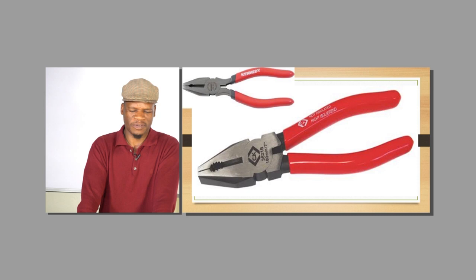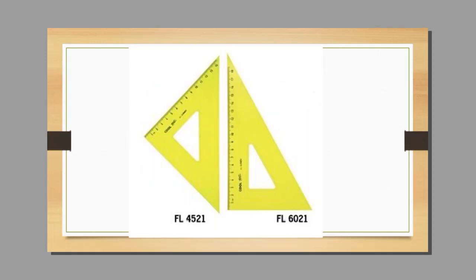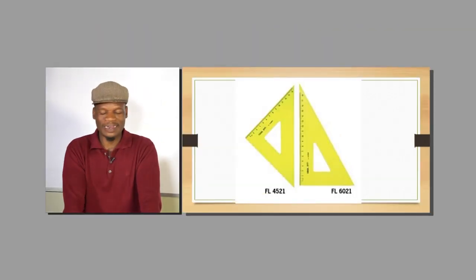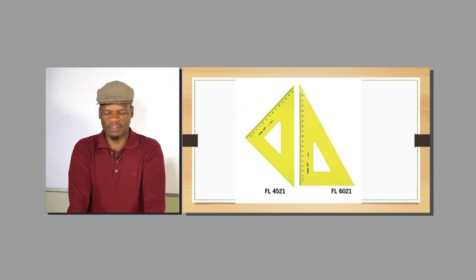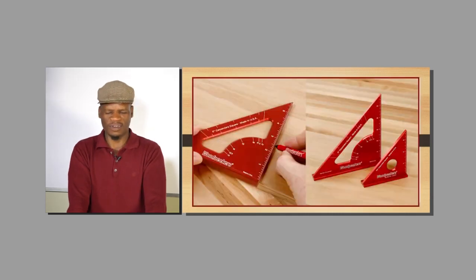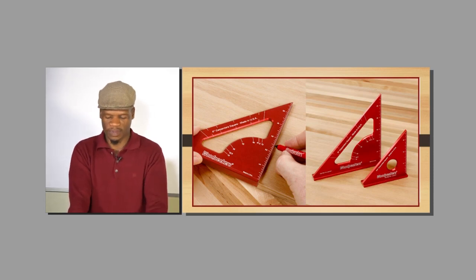You have got a set of pliers — some are used to cut wires, some to fasten, and some to remove materials. Then you have got your set squares, normally used to mark or measure angles. You have got a 45-degree set square and a 60-degree set square, which also comes with a 30-degree angle. You can use them to mark, draw, or transfer measurements according to those angles.